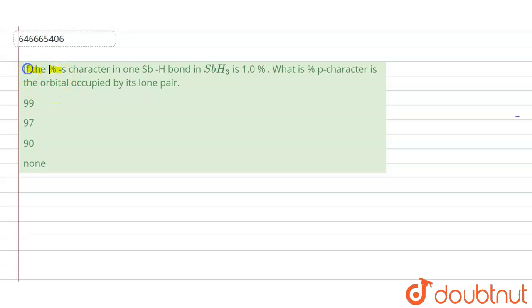If the percentage s character in one SbH bond in SbH3 is 1%, what is the percentage p character in the orbital occupied by its lone pair? So basically SbH3 will have one lone pair, so in that way one lone pair will be present.